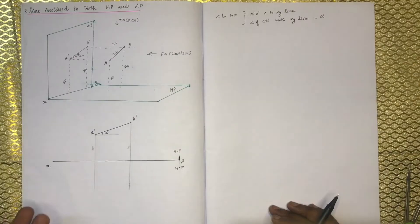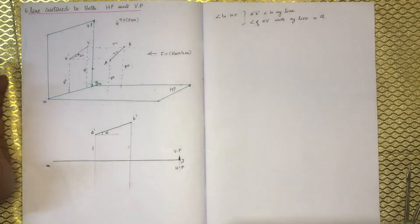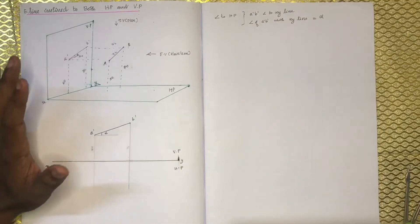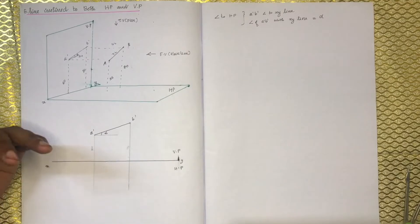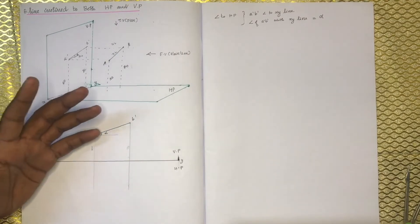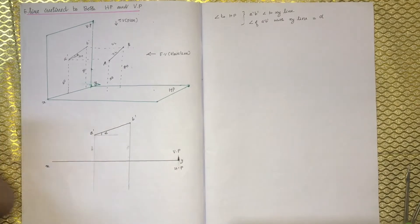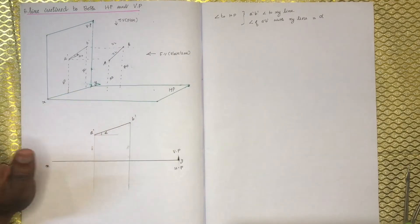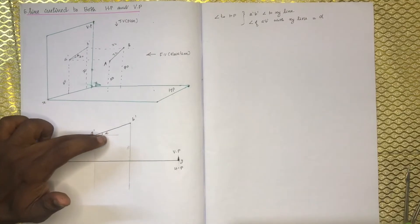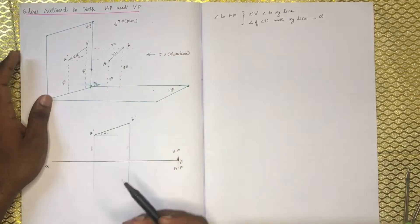You can see all the data in the notebook. Now I'm going to tell you about the video and all the questions. The line is parallel to VP and HP; the line is parallel to VP and inclined to HP.